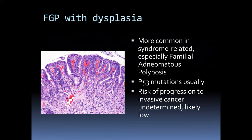Fundic gland polyps can present with dysplasia — a situation where you would not refrain from mentioning it. Here's a polyp with surface dysplasia, often associated with TP53 mutation, potentially in patients with familial adenomatous polyposis. What you don't see here is the glandular dilatation, which was further down in the polyp in the fundic-type glandular tissue.